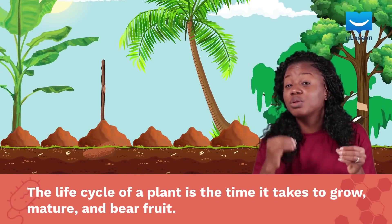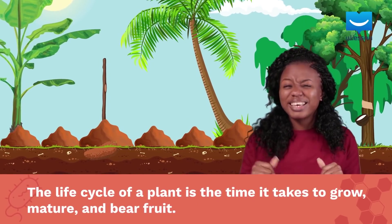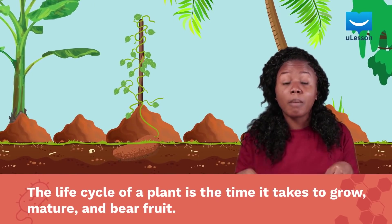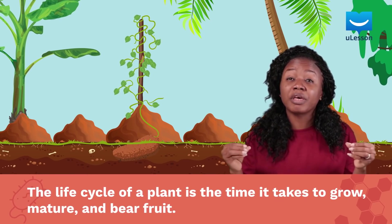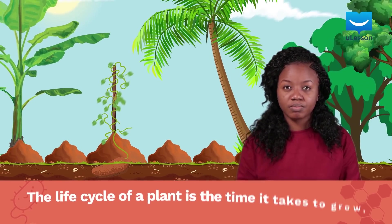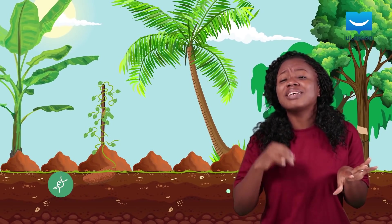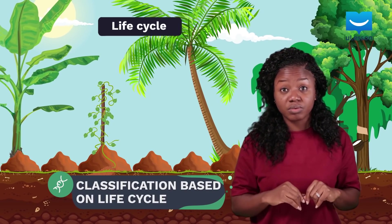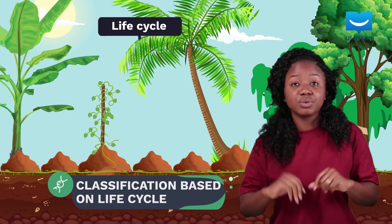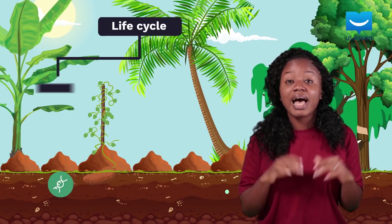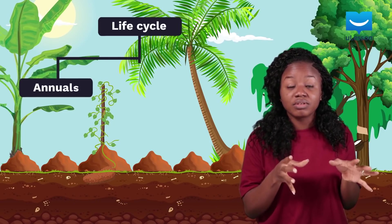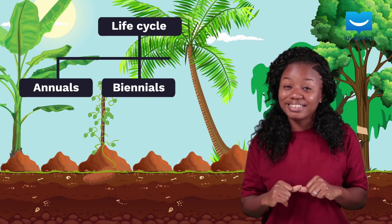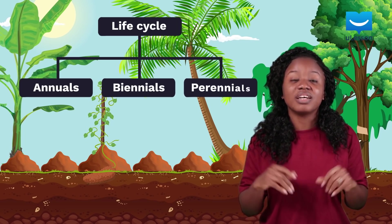The complete life cycle of a plant is the time it takes to grow, mature, and bear fruit. When plants are classified based on their life cycles, they are put under three categories: annuals, biennials, and perennials.